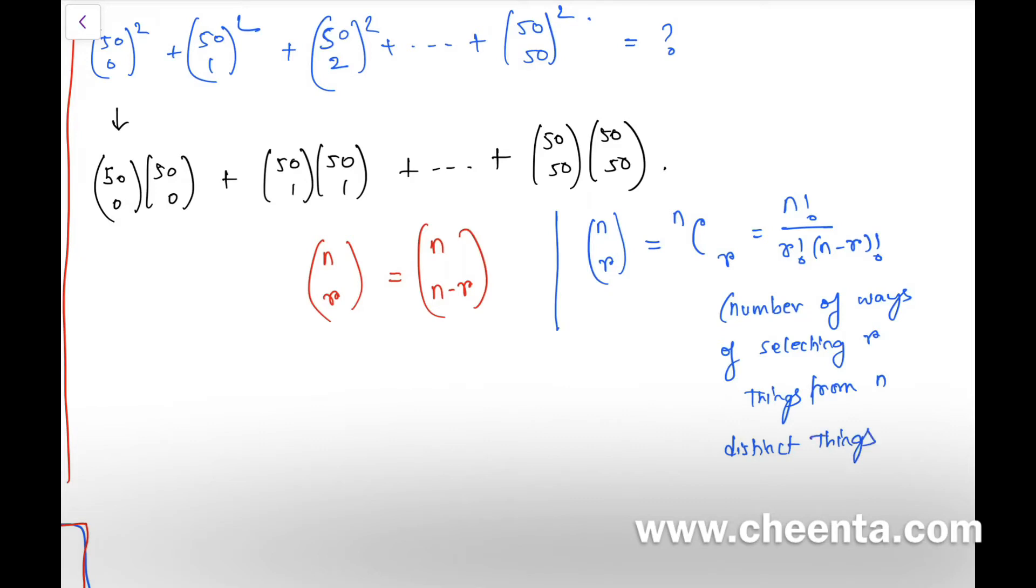We do not consider the arrangements as different—arrangement of same selection are not counted separately. So, number of ways of really selecting r things from n things.